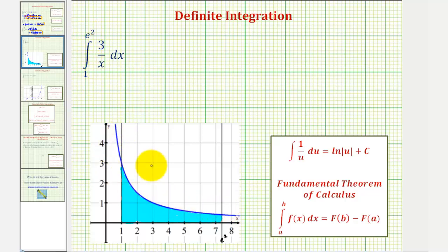graphed here in blue, where e squared is a little bit less than 7.4, notice how the function is non-negative over this interval, and therefore the value of this definite integral will give us this area of the shaded region, or the area over this closed interval below the function and above the x-axis.